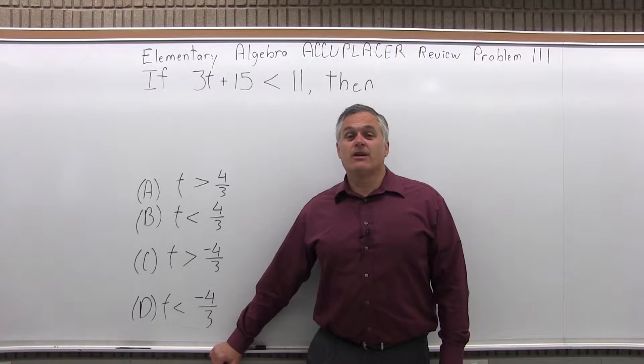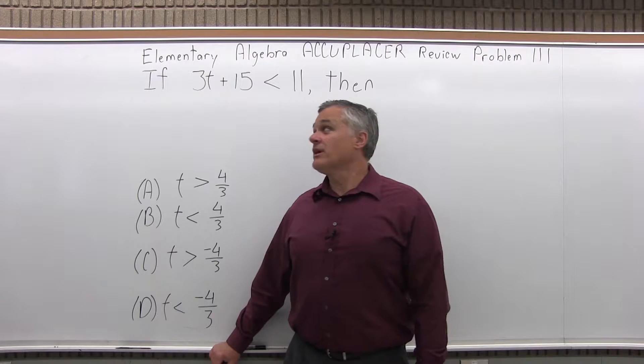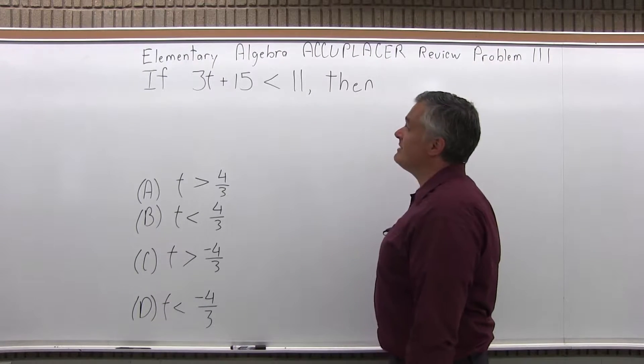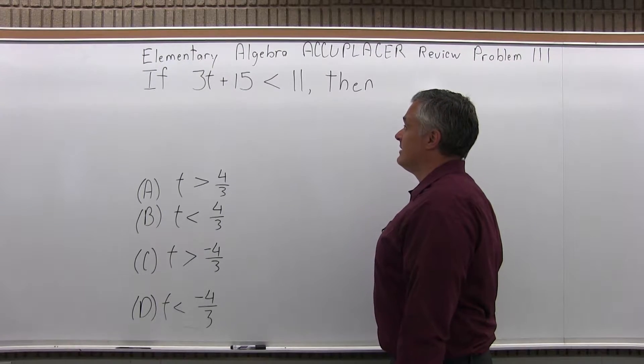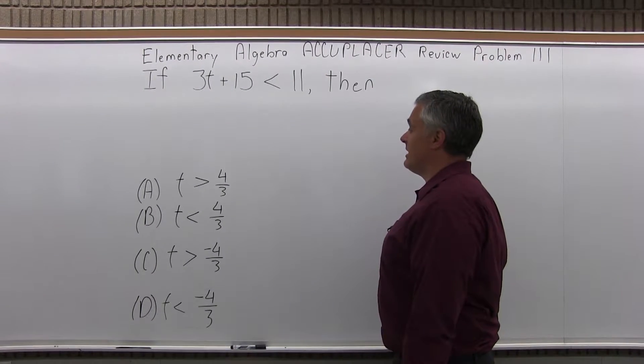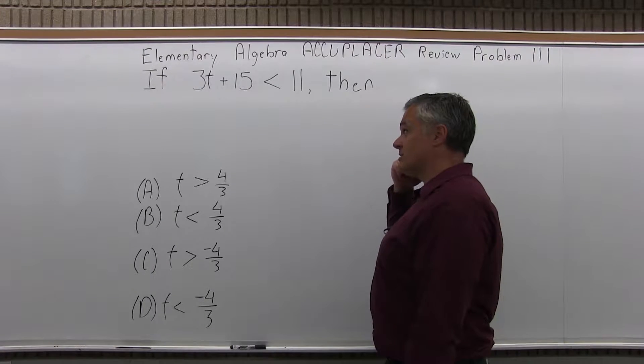This is the Elementary Algebra Accuplacer Review, Problem 111. It says if 3t plus 15 is less than 11, then, and we have four options to choose from.